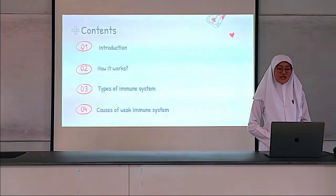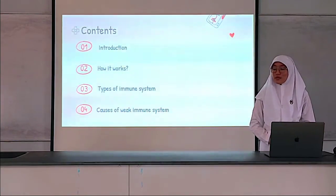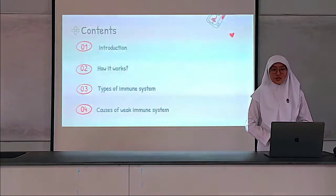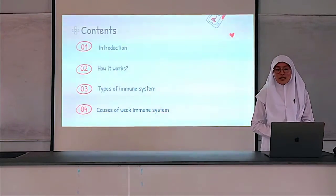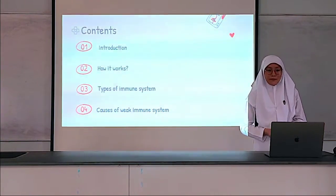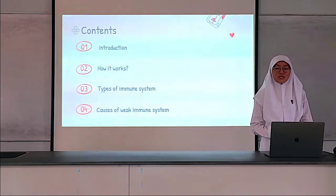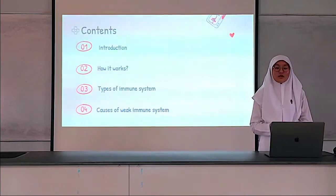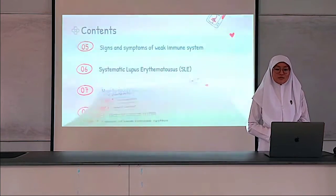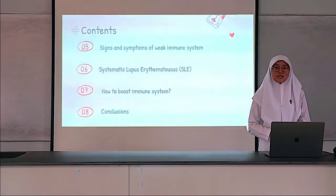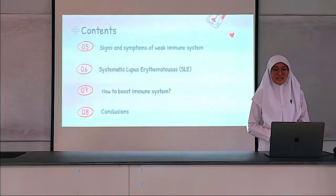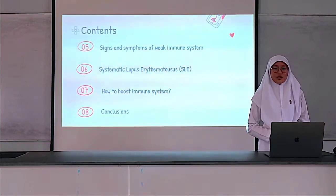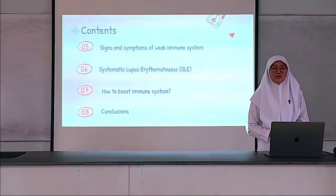In my presentation I'll be covering eight points: one, the introduction of what is the human immune system; two, how our human immune system works; three, the types of immune system; four, the causes of weak immune system; five, the signs and symptoms of weak immune system; six, Systemic Lupus Erythematosus, also known as SLE; seven, how to boost our immune system; and eight, a simple conclusion or reminder.